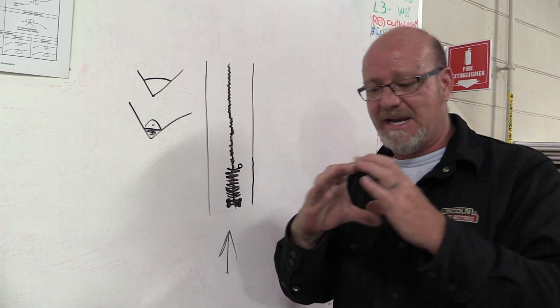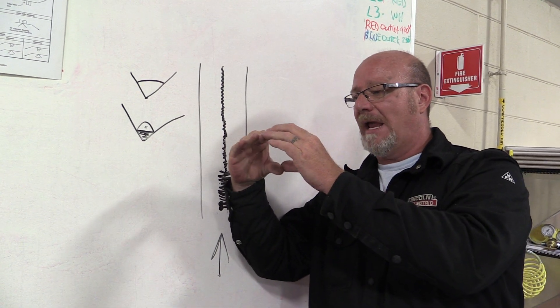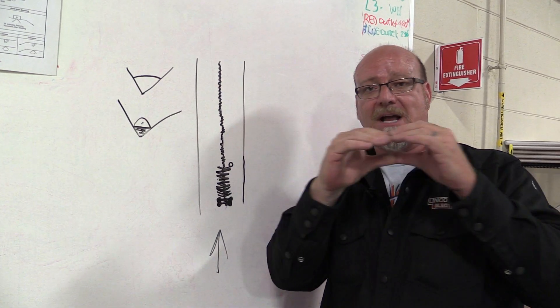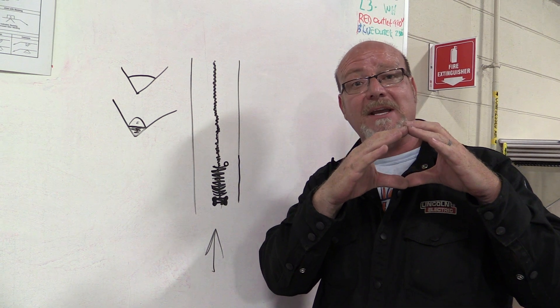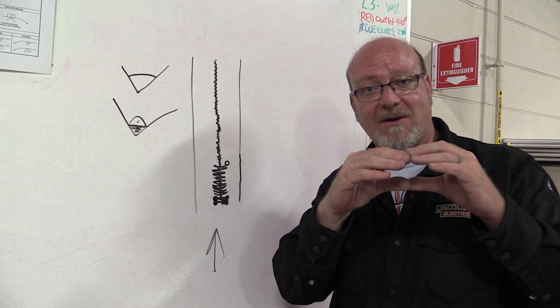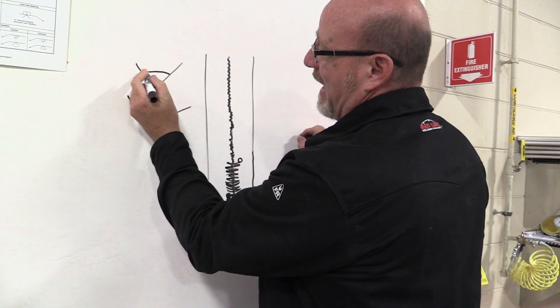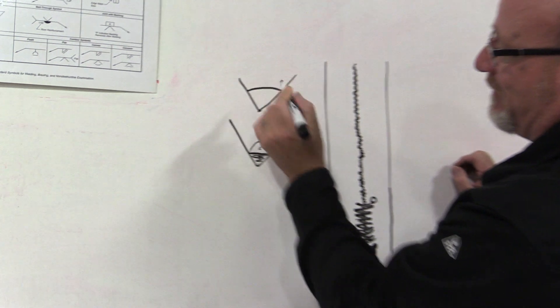There's only one technique to get these welds flat with a weave, and that is move across the middle and hold on the sides. Basically what you're doing is taking that molten puddle and you're stretching it out and letting it build up. Stretching it out and letting it fill. Stretching it out and letting it fill.